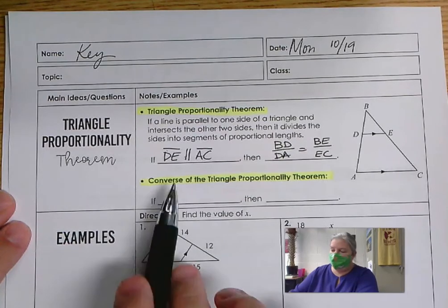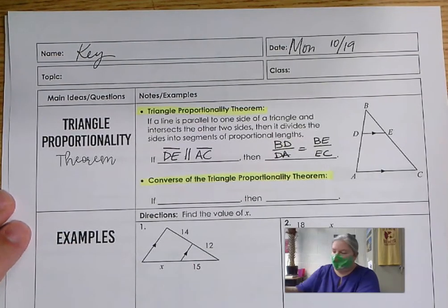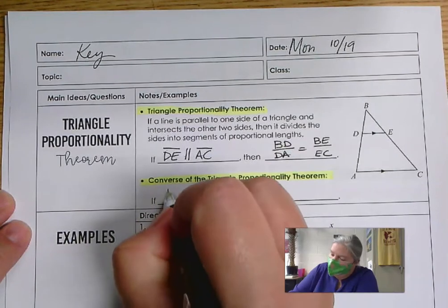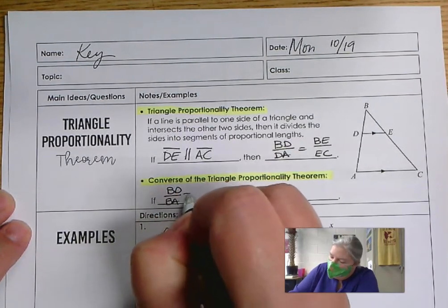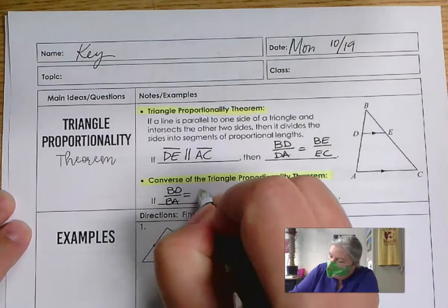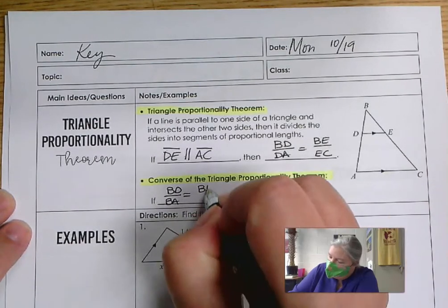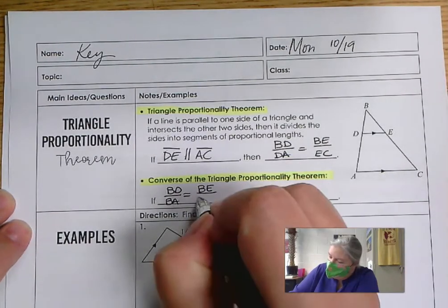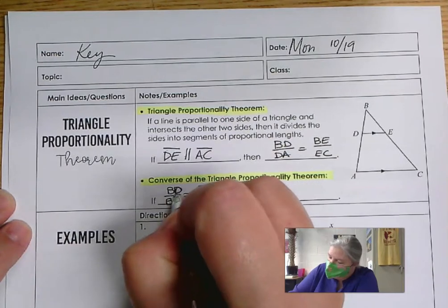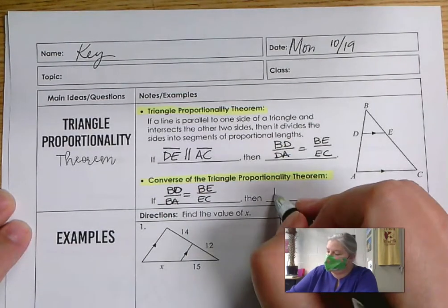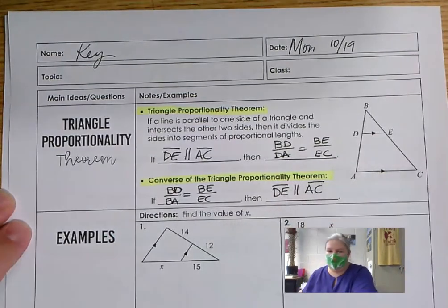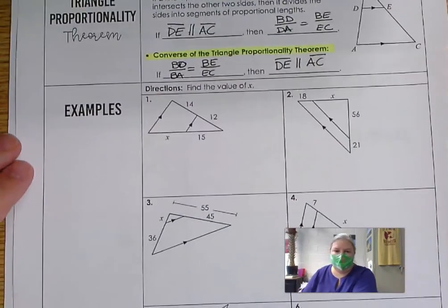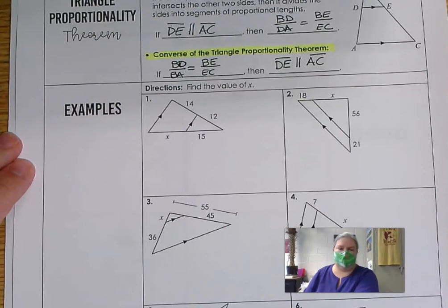And the converse, remember, is when you just turn it around. So in other words, if I know that BD over BA is the same ratio as BE over EC, then that means those lines — or those segments — are parallel. So using that information, here are some examples.